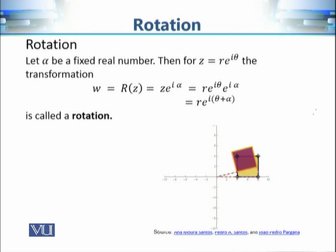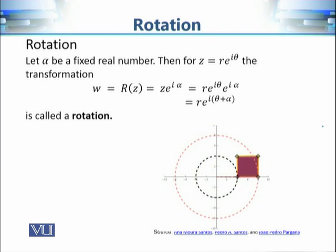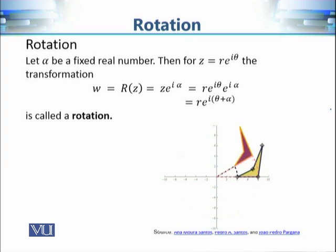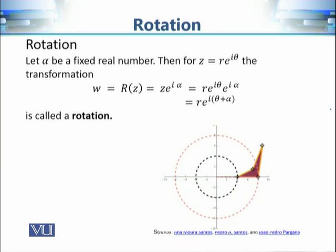If we change the value of α the rotation changes — as we increase α the whole shape rotates. This transformation is rigid: the shape of the set is not changed — a square remains a square and an arbitrary shape remains the same. The only effect is that it is rotated around the origin; nothing else about the set has been changed.